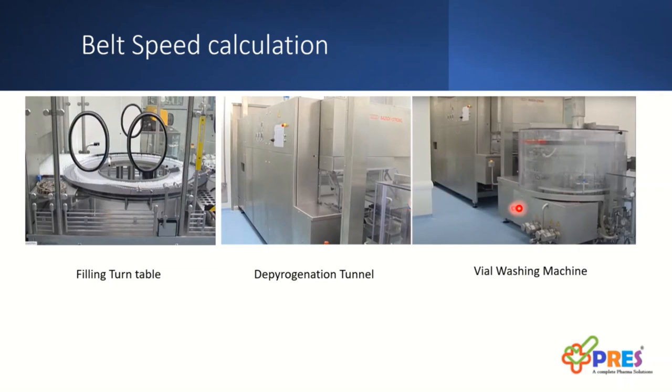Now vials will move through the cool zone, preheating zone, heating zone, and cool zone, and it will move to the vial turntable. It's a filling turntable installed to support minor adjustments. If the filling machine is stopped, it will accumulate the vials and give some time to operator to adjust the machine.